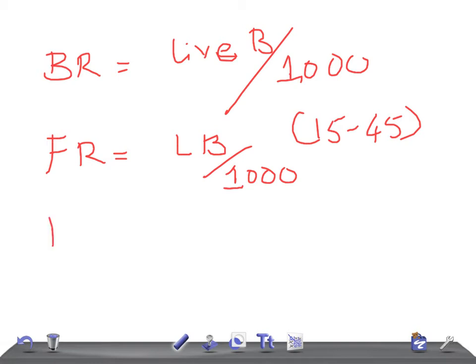Now death rate. What's the death rate? How do you calculate? Tell me formula. Number of deaths divided by 1000. Okay. Right.